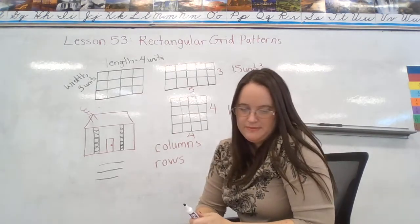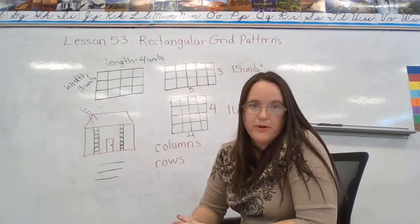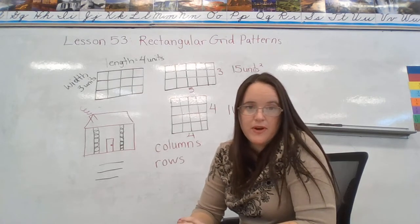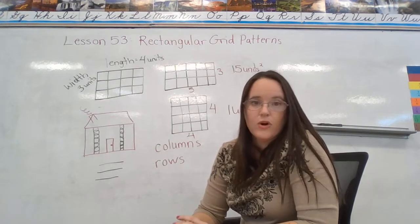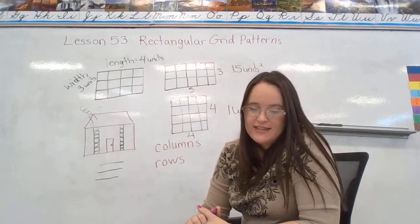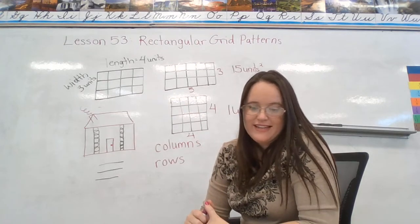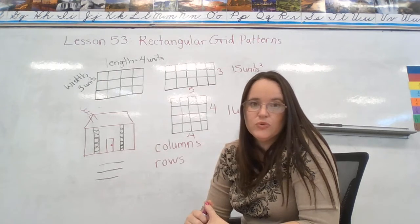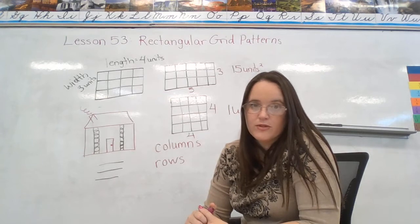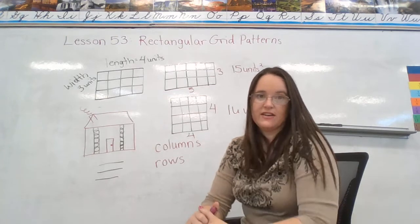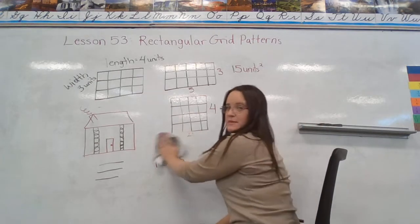For the next problem, you should use grid paper. So if you have graph paper at home, that's a great resource for this type of problem. Or you might just draw your boxes out the way I did. But you are going to draw a rectangle that is five units by two units. And then you're going to tell me how many small squares are in that rectangle. So I'm going to do it on the board while you do it at home. If you need a little extra time, hit pause.